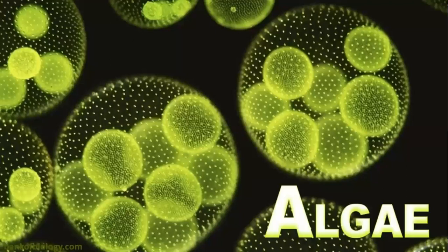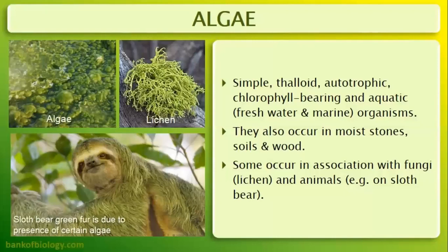Now our first topic is algae. Algae are simple, thaloid, autotrophic, chlorophyll-bearing, and aquatic organisms. Simple means their structure is very simple. Thaloid means they are not differentiated into stem, root, and leaves — the thallus structure does everything. Autotrophic means they can perform photosynthesis. Aquatic means they live in water — either fresh water such as rivers, ponds, and lakes, or in marine environments.